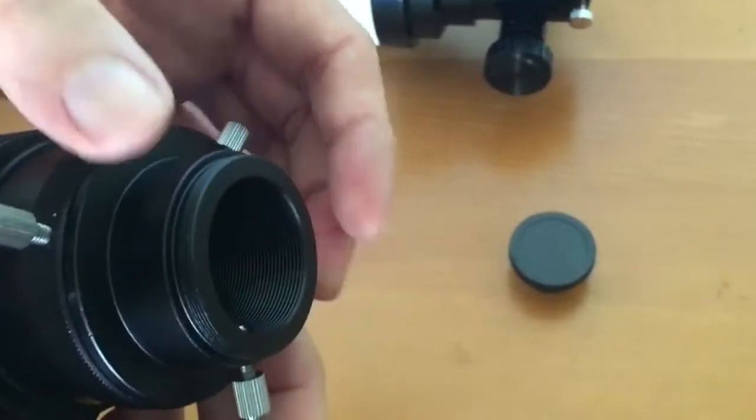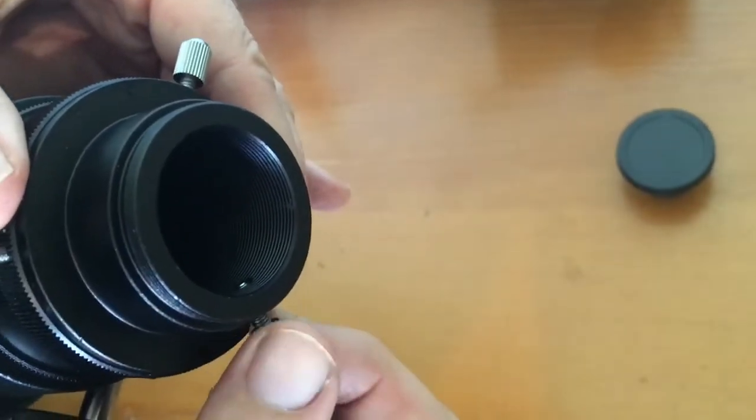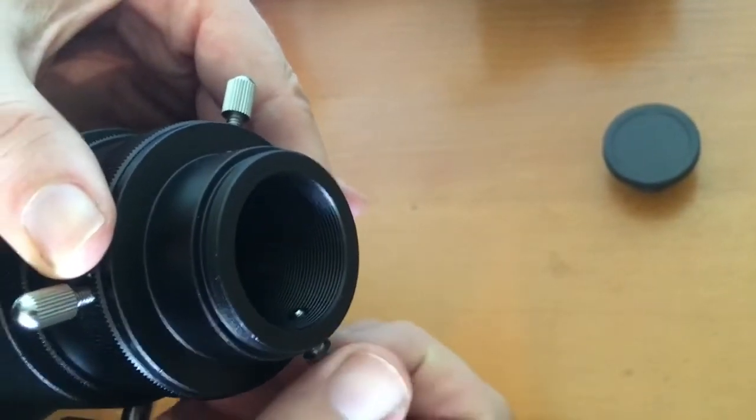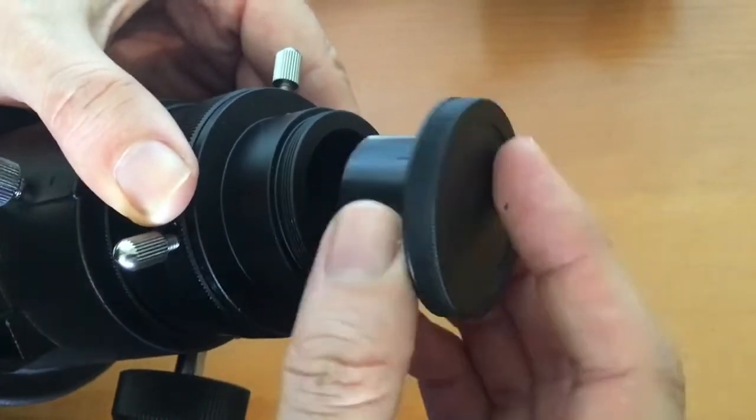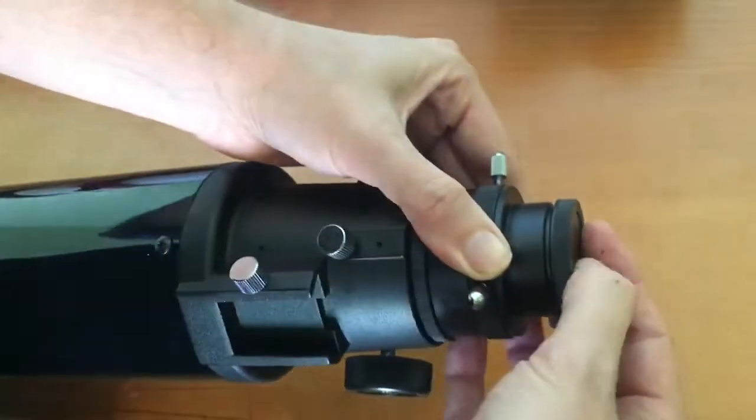So you just slot that in there. You will notice it is a straight screw that locks it in. There is no compression ring here. So that will dig into your eyepiece or your diagonal or whatever you're using with it.